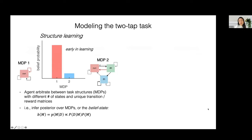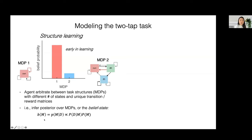To formalize this hypothesis, I developed a reinforcement learning model composed of structure learning and parameter learning components that operate in parallel. The job of the structure learning component is to arbitrate between possible task structures that might explain the agent's environment. It does this by inferring the posterior over MDPs, which is essentially a belief state — what is my belief about the model of the world given the data I'm receiving?